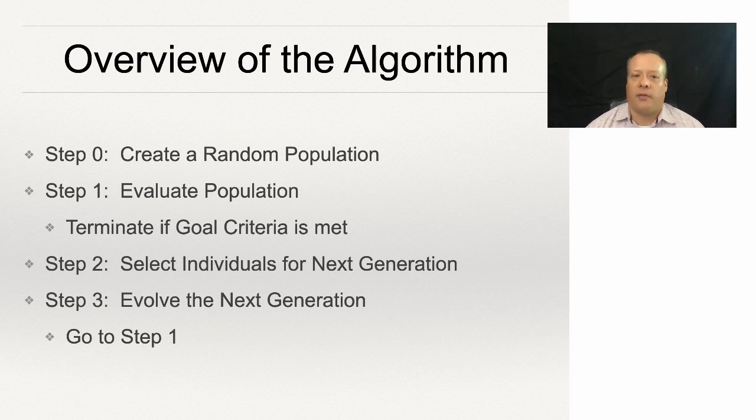Step two: select the individuals who will move into the next generation. Step three: evolve the next generation, and then you go to step one and you keep doing this until some goal criteria is met.